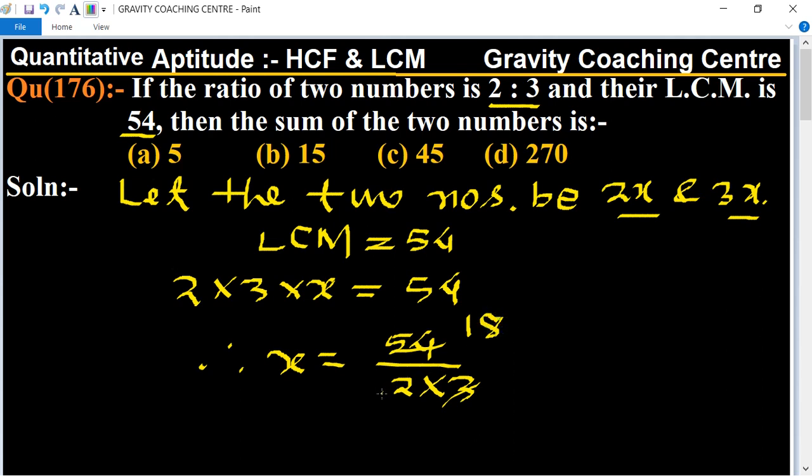So therefore the two numbers: first, 2x equals 2 into 9 equals 18.